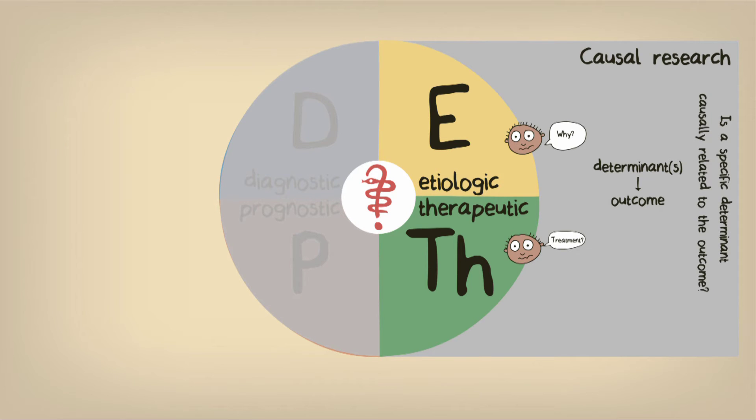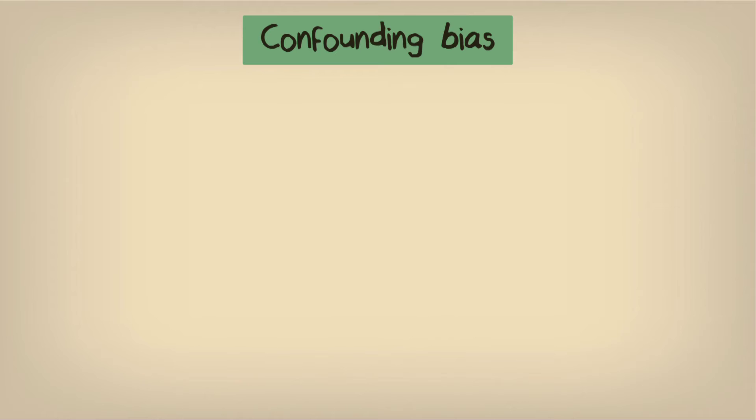This implies that in such causal research, it should be unequivocally shown that the observed relationship between that determinant and the outcome is not explained by another factor, that is, by confounding. Confounding bias is an essential consideration in causal research.